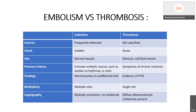Though acute limb ischemia may be due to embolism or thrombosis, and though treatment remains the same, we need to know the difference to understand the prognosis. In embolism, there is a defined source; onset is sudden, vessels are normal, and patients may have prior history of MI, cardiac arrhythmias, or LV clots. In thrombosis, onset is acute, there is underlying stenosis or calcification, and patients have history of chronic ischemia. In embolism, unaffected limb pulses are normal; in thrombosis, there is evidence of peripheral vascular disease. Embolism may be multi-site, whereas thrombosis is always single site.